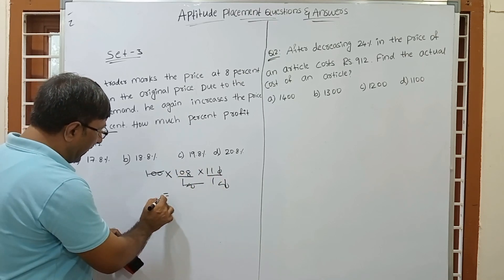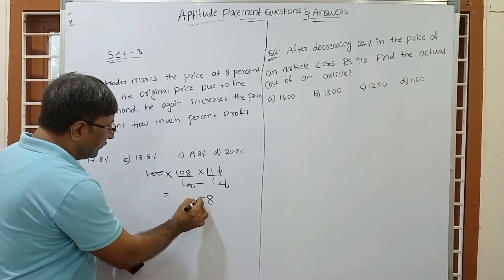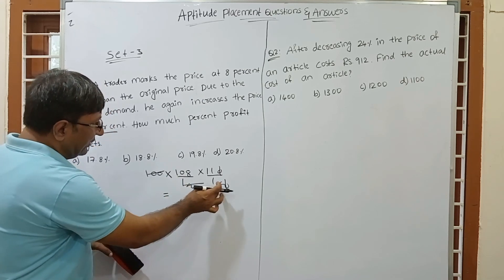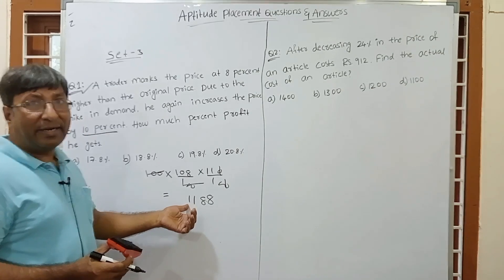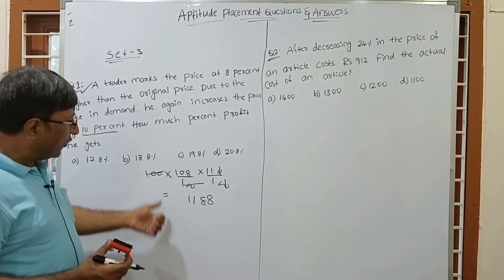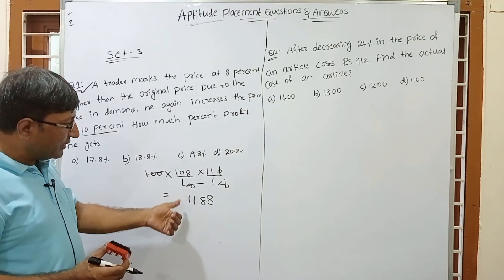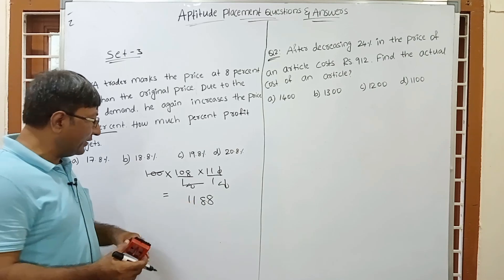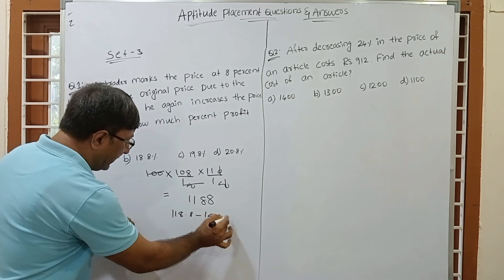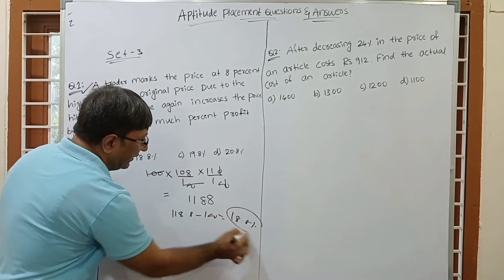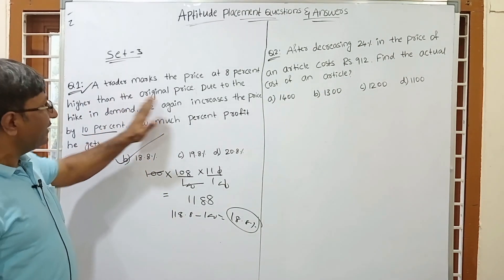Now multiply 108 × 110: that gives 11,880, divided by 100 = 118.8. Since the result is greater than 100, we subtract 100 to find the profit percentage: 118.8 − 100 = 18.8%. So the correct answer is 18.8% profit, which is option B.